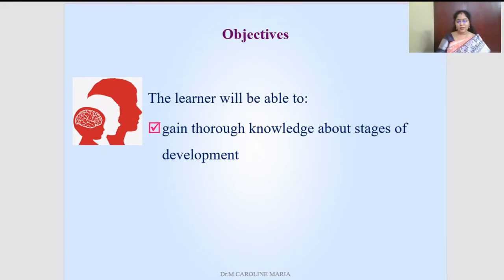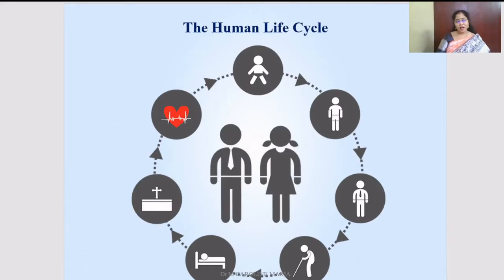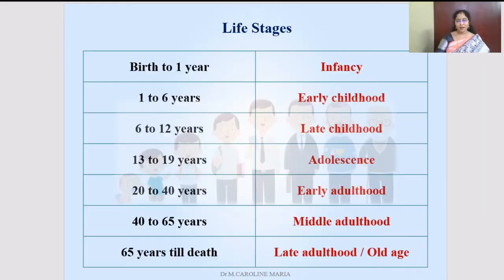Our human life cycle starts from an infant, and the next stage they grow as childhood, and this childhood could be divided into two: early childhood and late childhood. Then comes adolescence, then comes middle age or adulthood, then comes old age, then death. This is what the human life cycle looks like.